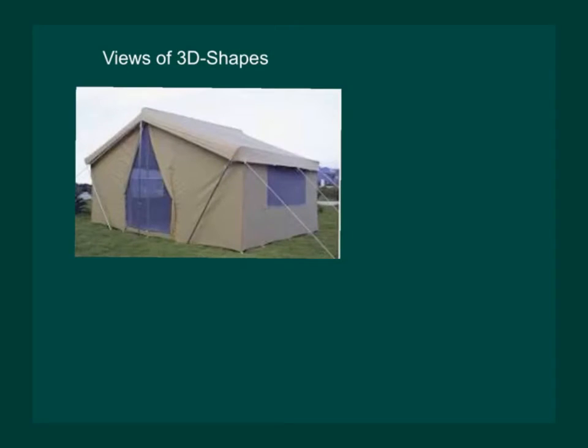Now let us learn how a three-dimensional object can look differently from different positions so that we can draw from different perspectives. Let us consider this picture of a tent house and observe it from the top, from the side and from the front and try to draw the pictures.